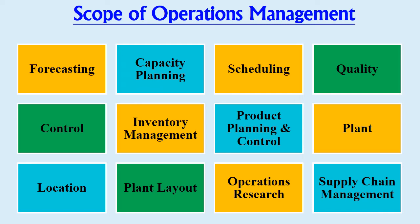Operations management coordinates all departments, so its scope is very wide as it covers the whole business organization. First is forecasting — the process of anticipating the future. The operations manager forecasts customer demand in advance so that the production process can be carried out accordingly. Second is capacity planning, which is an important issue for both manufacturing and service organizations. It means the maximum production rate of an organization and is related to the demand of a particular product. This involves estimating present capacity, forecasting future capacity, and identifying resources to meet future capacity needs.